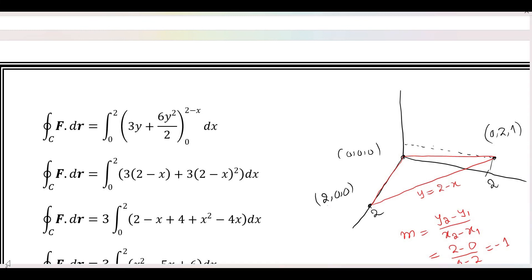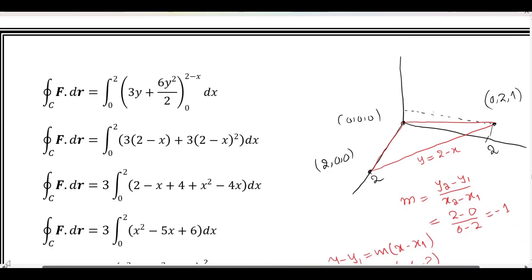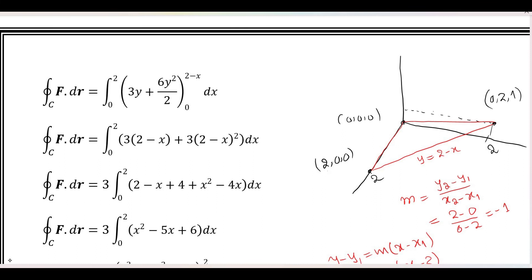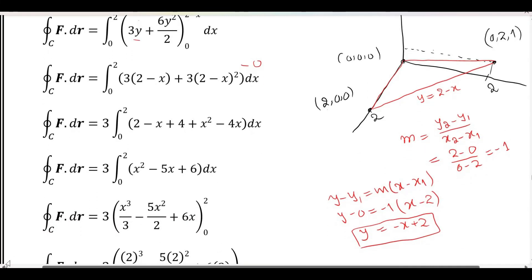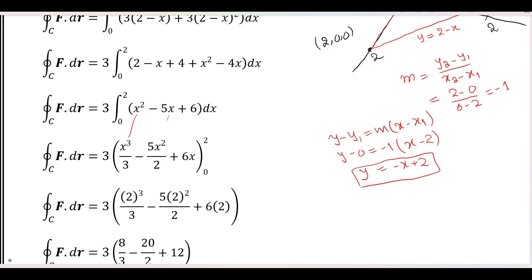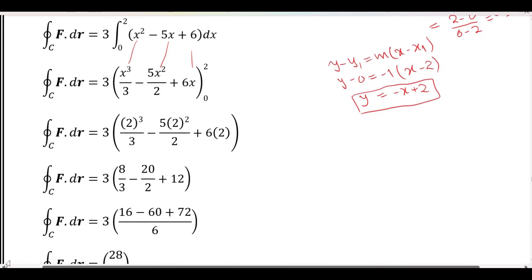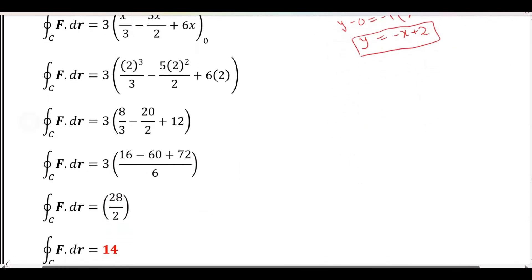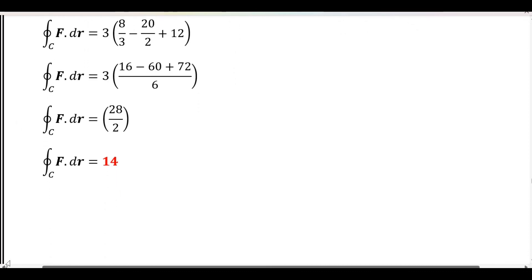We integrate 3 with respect to y, and 6y with respect to y, with limits 0 to 2 minus x. We substitute the upper limit 2 minus x and the lower limit 0. After evaluating both integrals, the final answer is 14.